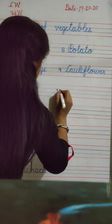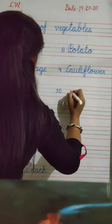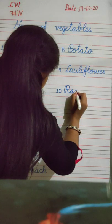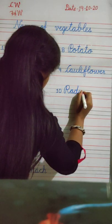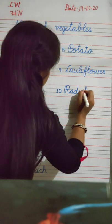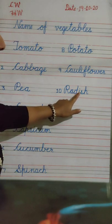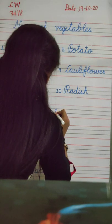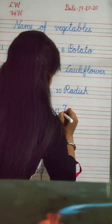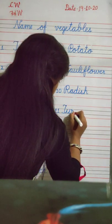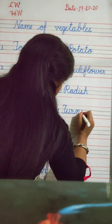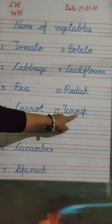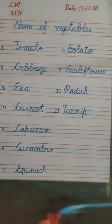Number 10. R, A, D, I, S, H. Radish. R, A, D, I, S, H. Radish. Okay. And next is T, U, R, N, I, P. Turnip. Next.